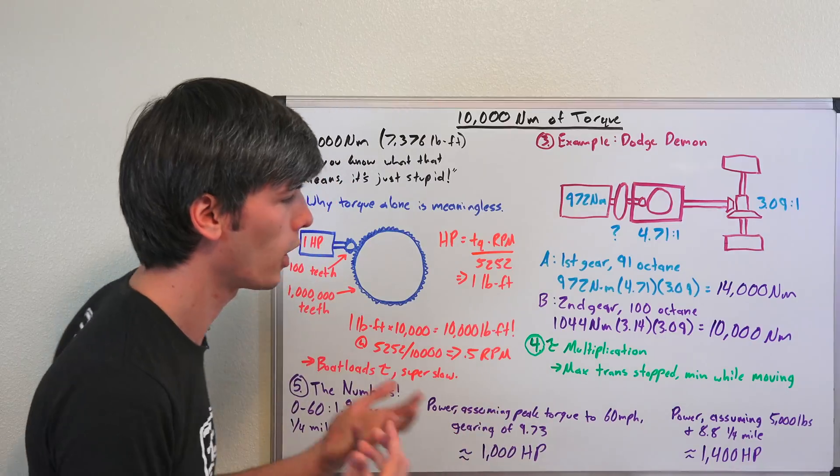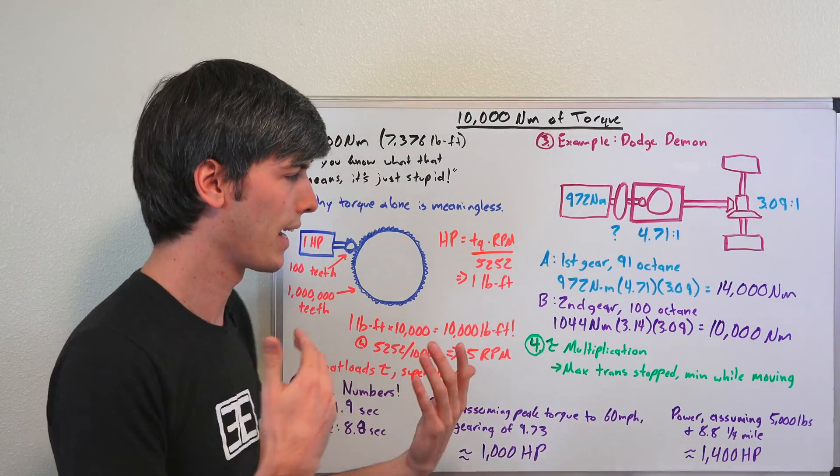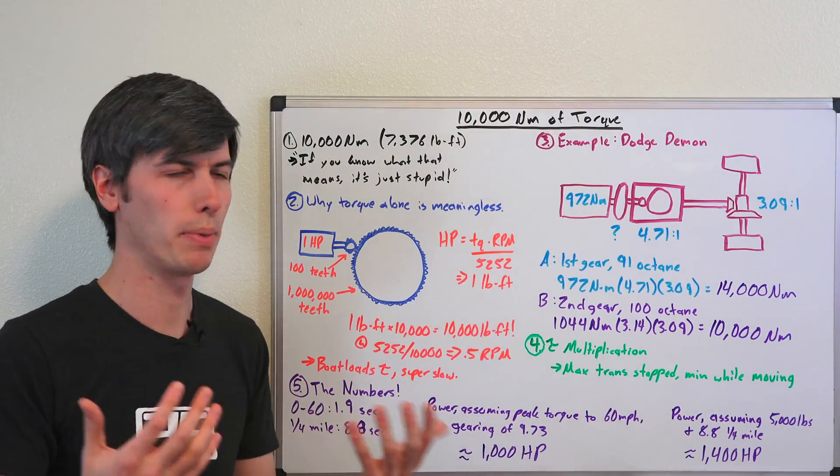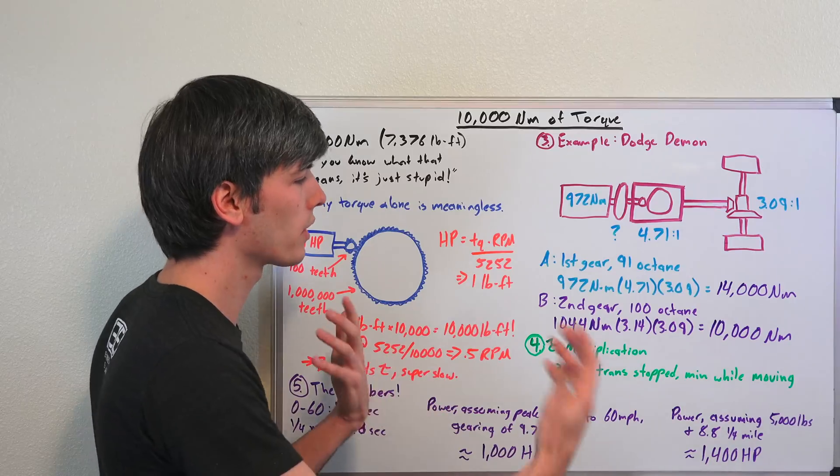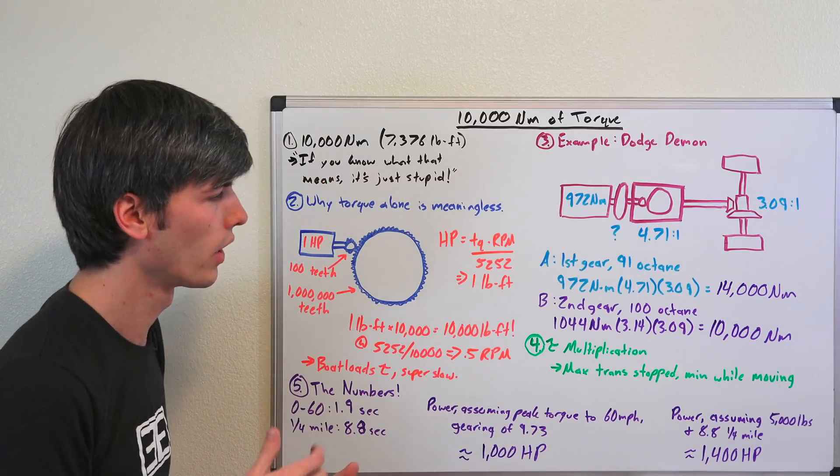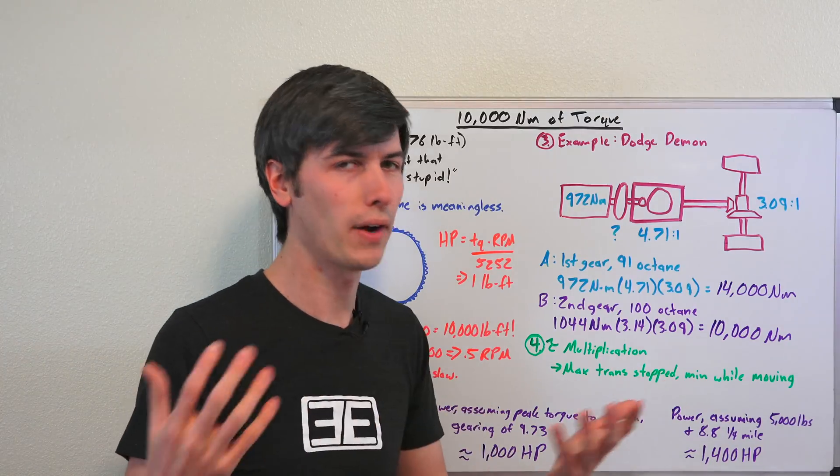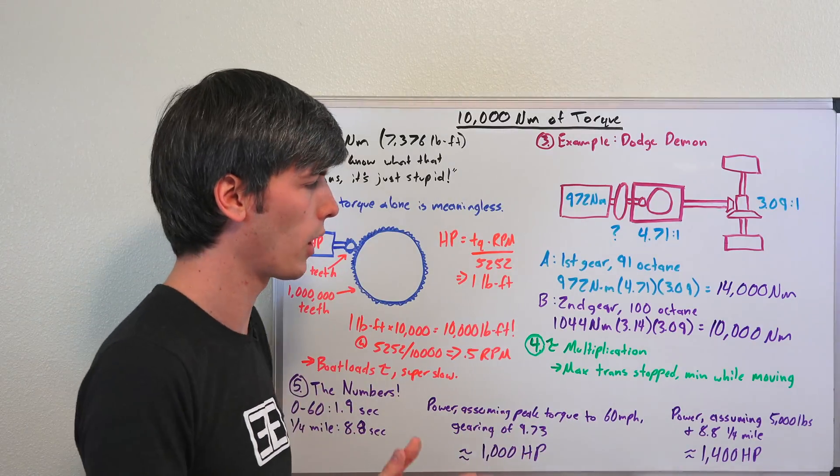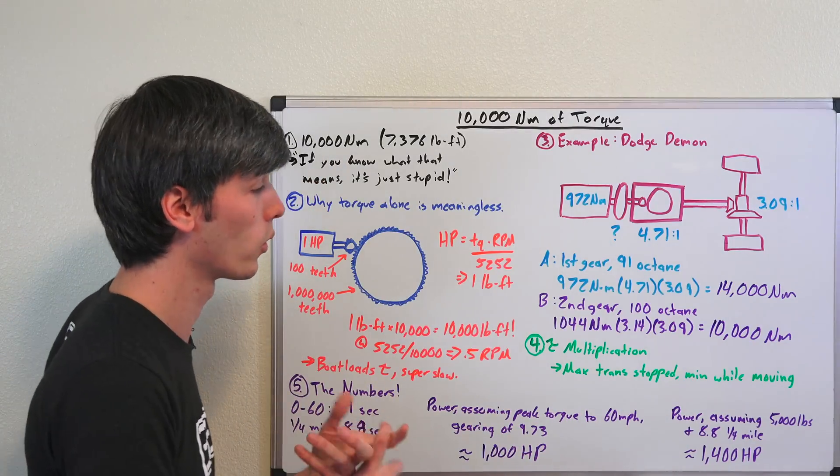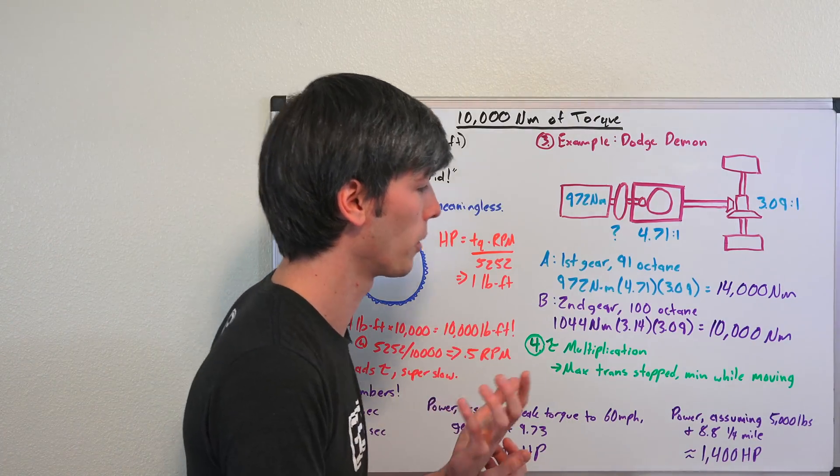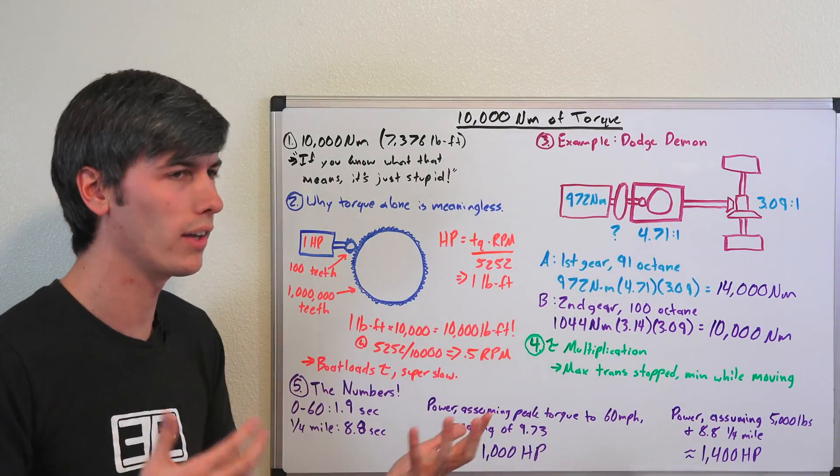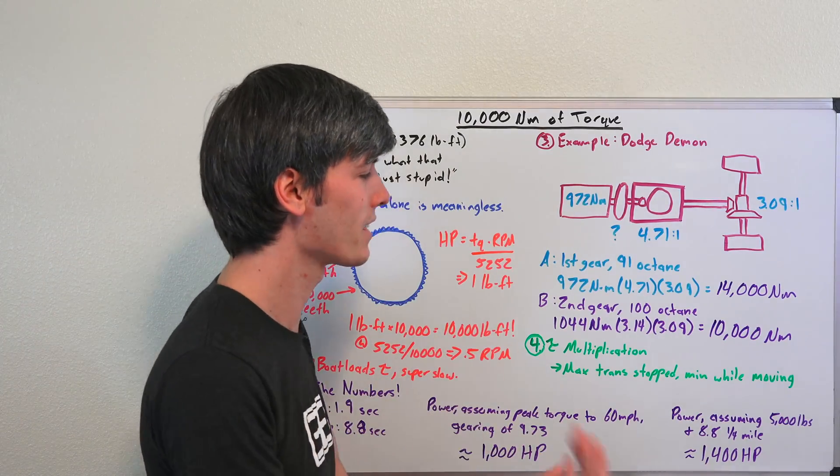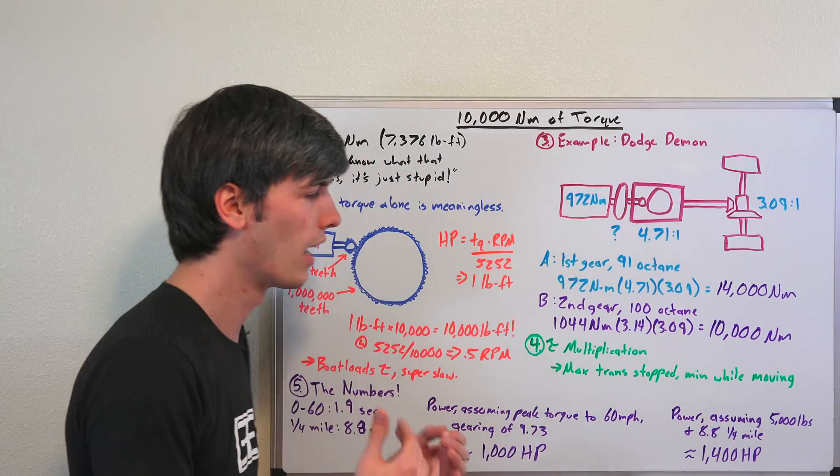So I plugged in a bunch of different calculators going with an estimate of about 5,000 pounds of weight for the Tesla Roadster. Again there are no published numbers for how much the car is going to weigh. I think it is going to be pretty heavy unless there's some serious breakthroughs in battery technology. So assuming it weighs around 5,000 pounds and hits the quarter mile in 8.8 seconds, it's going to be somewhere around 1,400 horsepower.